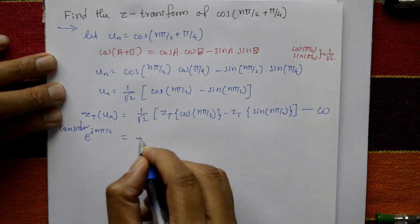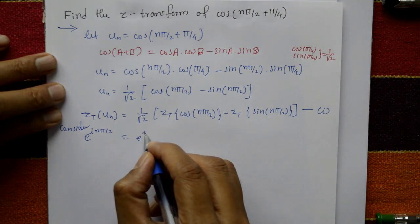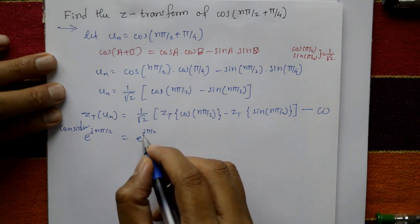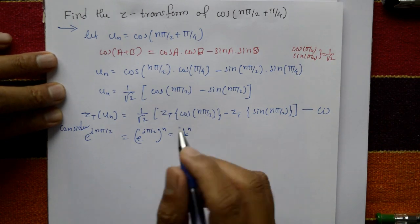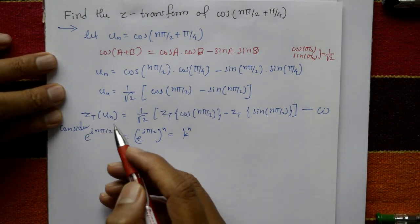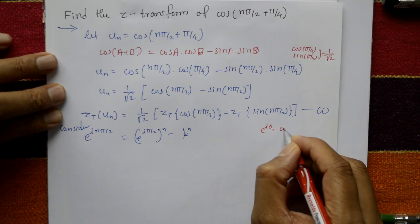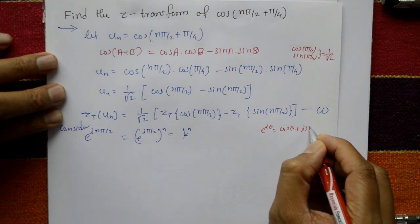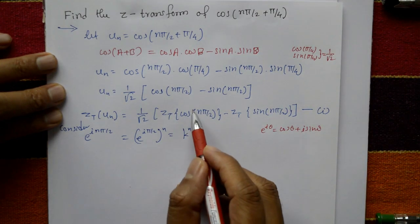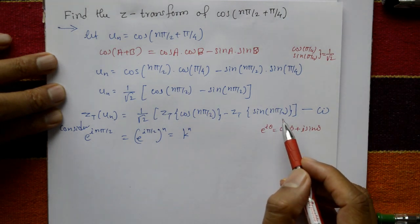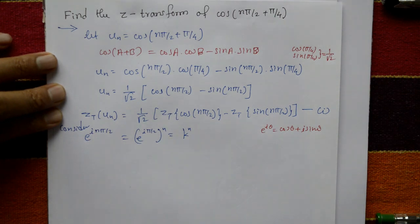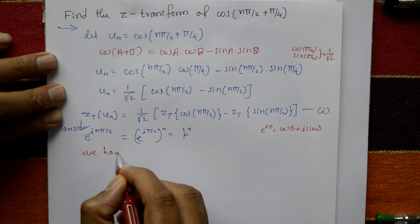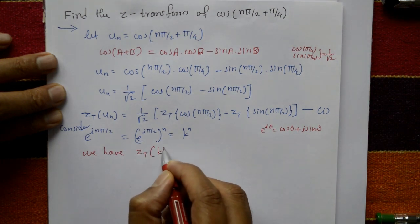Consider e^(inπ/2), which can be written as (e^(iπ/2))^n, i.e., k^n with k = e^(iπ/2). Using Euler's formula, e^(iθ) = cos θ + i sin θ, where θ = nπ/2.